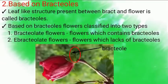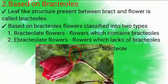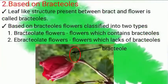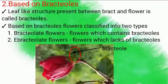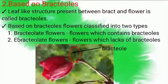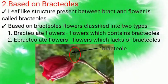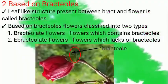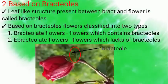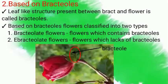Leaf-like structures present between the Bract and the flower are called Bracteoles. Based on Bracteoles, flowers are classified into two types: Number one, Bractiolate Flowers, which contain Bracteoles; and Number two, Ebractiolate Flowers, which lack Bracteoles.